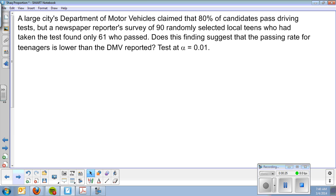Here's our example. A large city's Department of Motor Vehicles claimed that 80% of candidates passed the driving test. But a newspaper reporter's survey of 90 randomly selected local teens who had taken the test found that only 61 had passed. Does this finding suggest that the passing rate for teenagers is lower than the DMV reported?